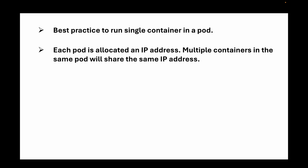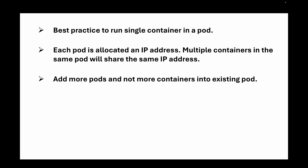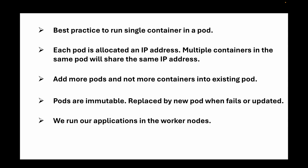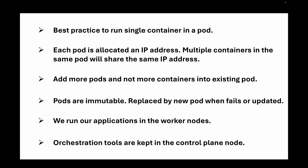Let's recap what we covered. Best practice is to run a single container in a pod, though we discussed when multi-container pods might be used. Each pod is allocated its own IP address, so multiple containers in the same pod share the same IP. As we scale, we add more pods — not more containers to an existing pod. Pods are immutable: if they fail or are updated, they are always replaced by a new pod. Worker nodes are where we run our applications, and we want to avoid placing any applications on the control plane node.